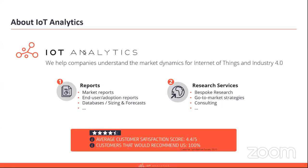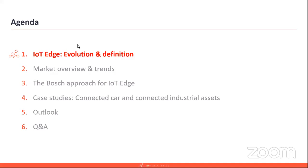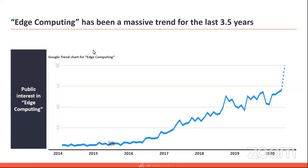Edge computing is one of the topics that we have been covering. The agenda for today's webinar: we want to start with the evolution and definition of the IoT edge, then get into the market overview and trends. Then I'll hand it over to Joshua and Kai from Bosch for their approach to IoT edge, as well as two in-depth case studies on connected car and connected industrial assets, followed by an outlook, and then we will jump into the Q&A section. Let's get started.